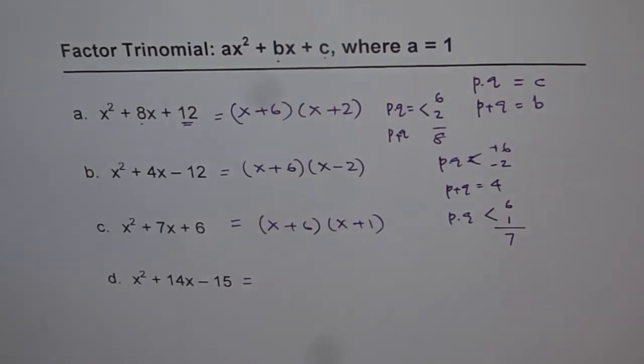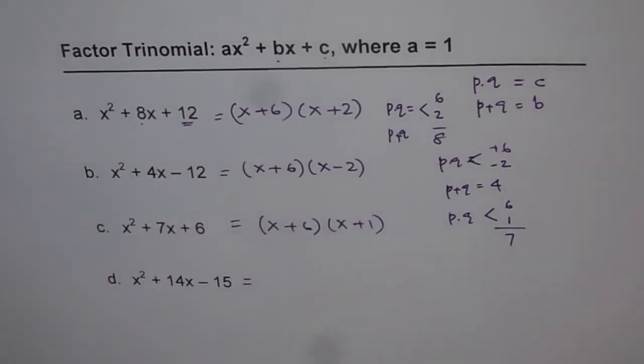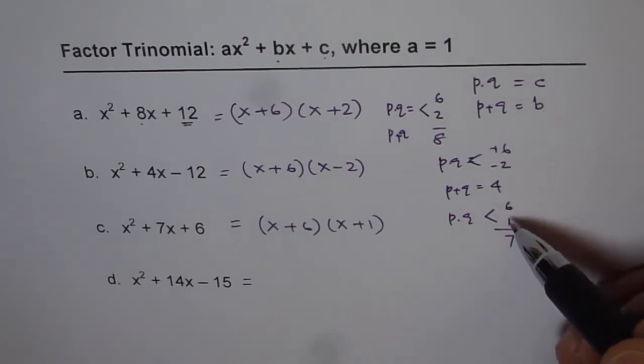Last one on this list. Now here in this list I have taken all these b coefficients as positive. When I am taking b coefficients as positive then when I do product the bigger number has to be positive.